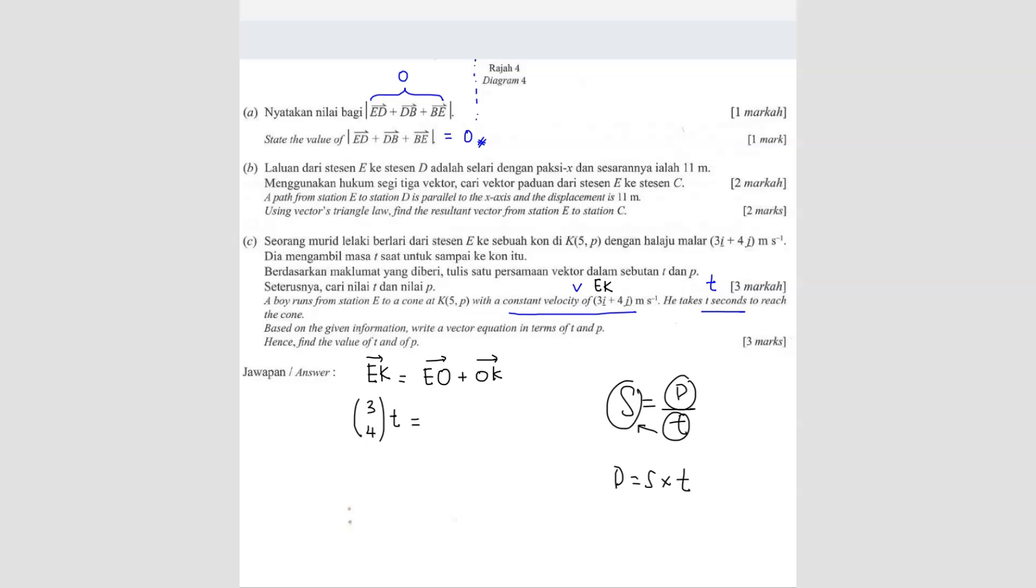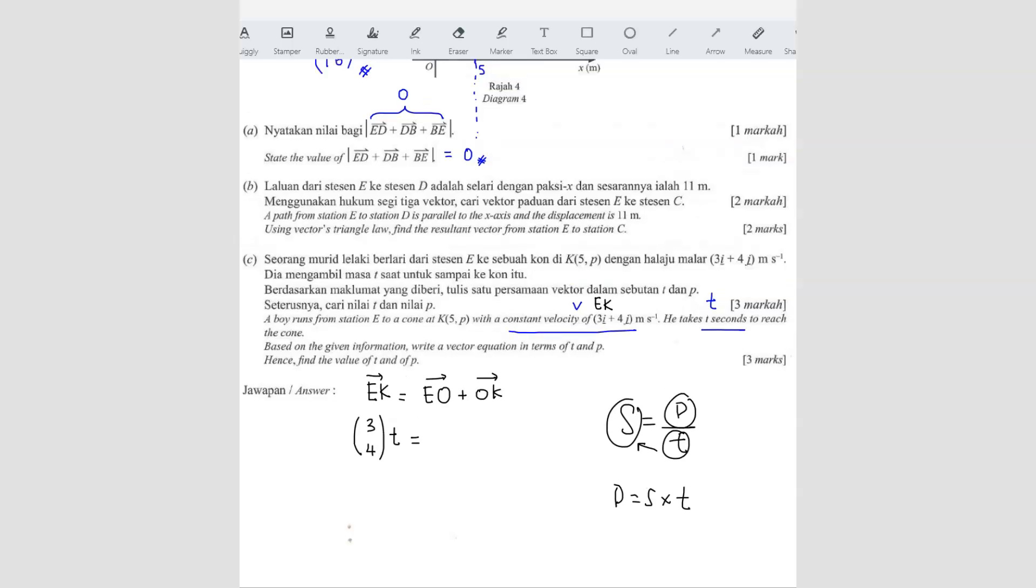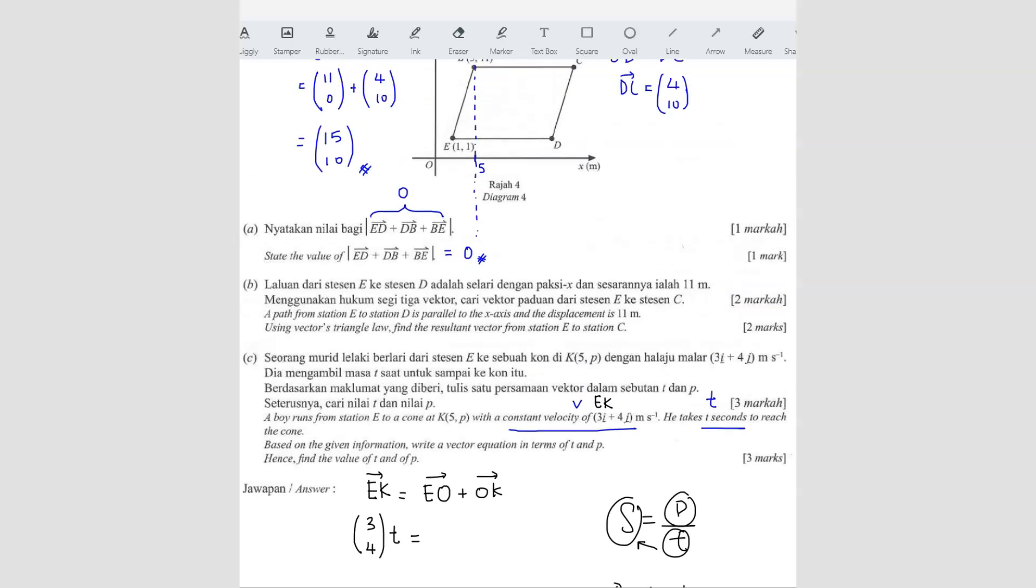Equals to, what is EO? EO, we can use the vector of OE, right? OE is (1, 1). Because you have this coordinate here, right? So OE is actually (1, 1). So EO will be (-1, -1) plus OK.